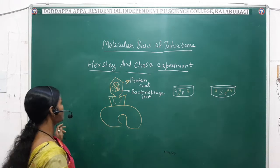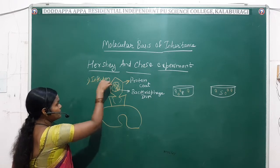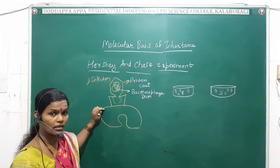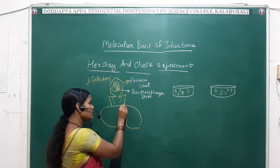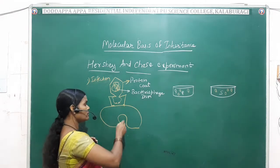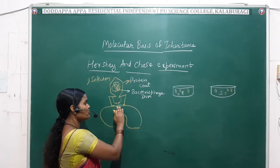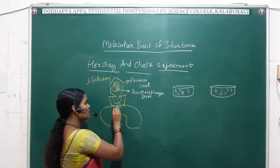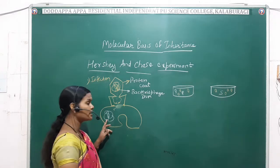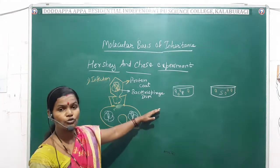The first step is infection. Infection means the bacteriophage sits on the bacteria and tears the cell wall using its tail fibers. The tail fibers rupture the bacterial cell wall and the bacteriophage DNA enters inside the E. coli bacteria. So the bacteriophage DNA mixes with the bacterial DNA inside.